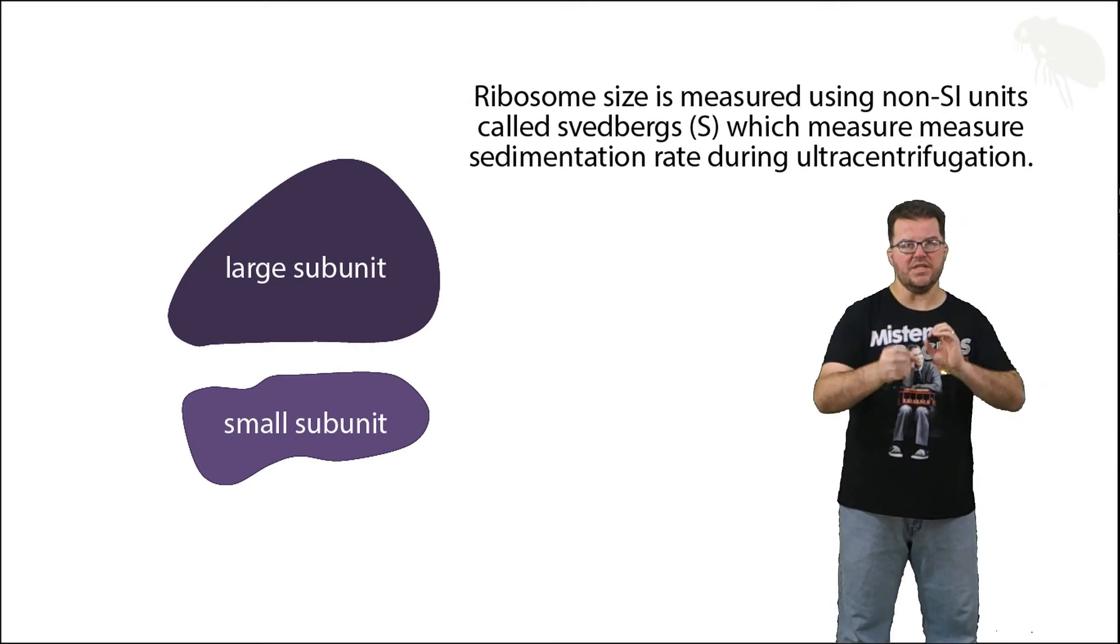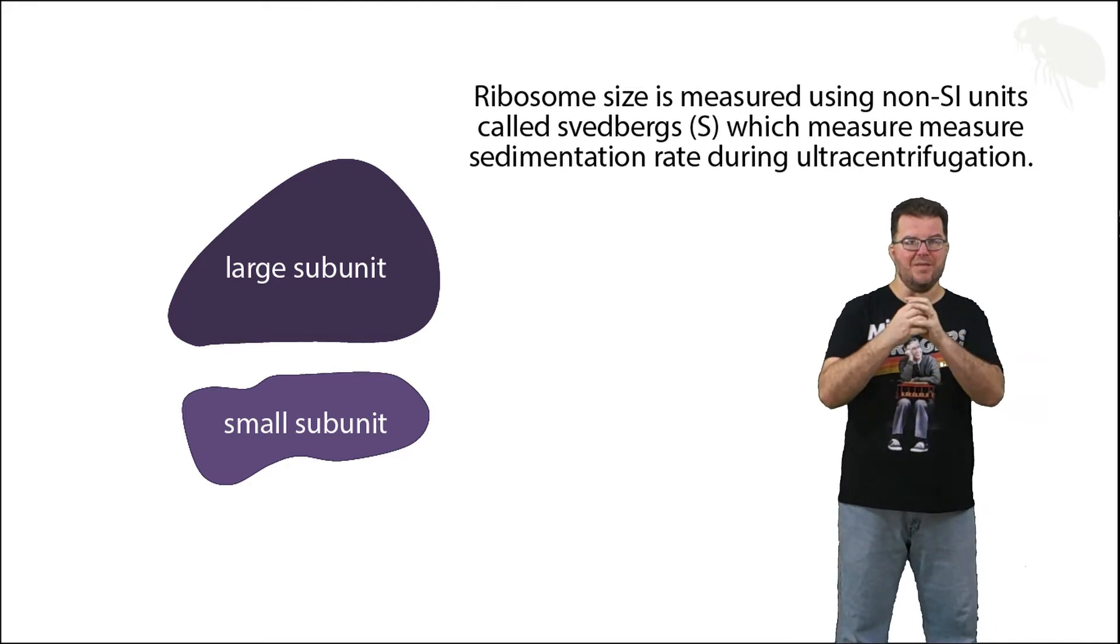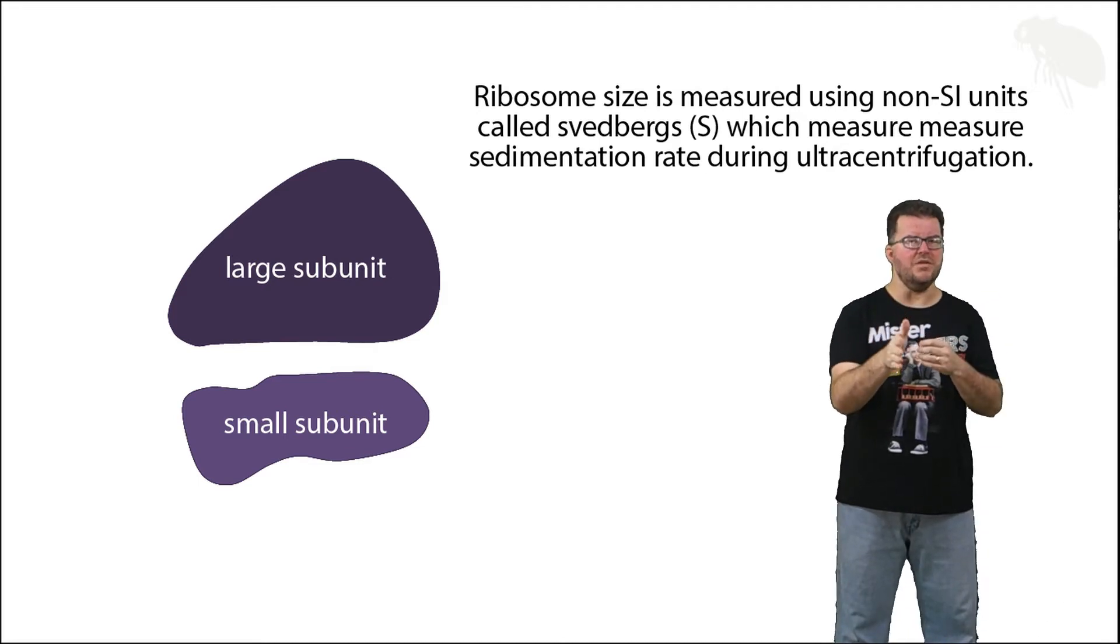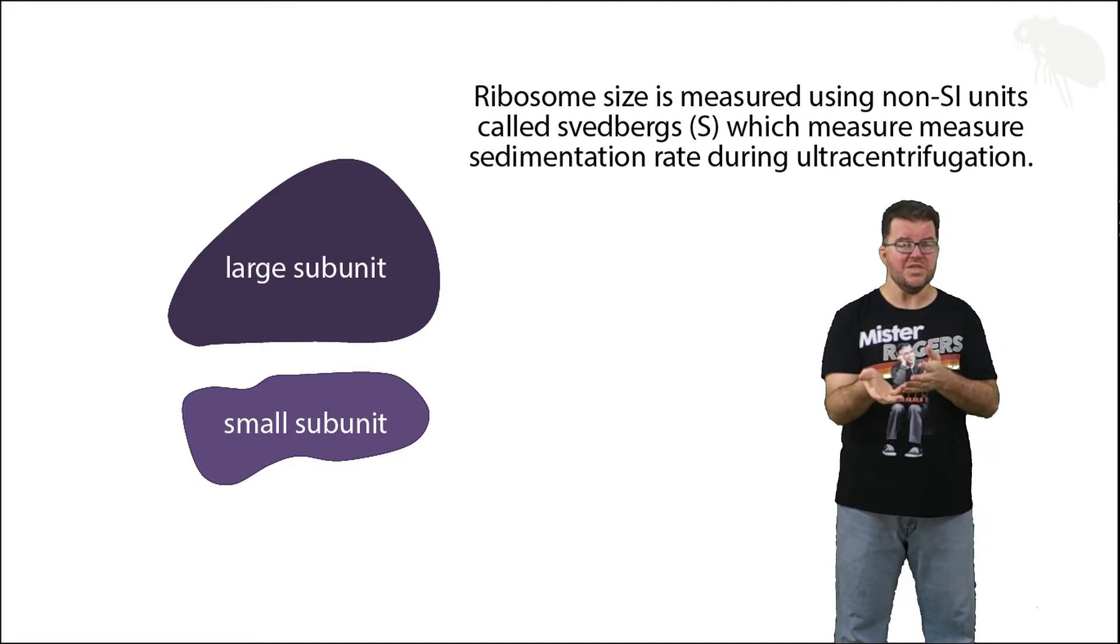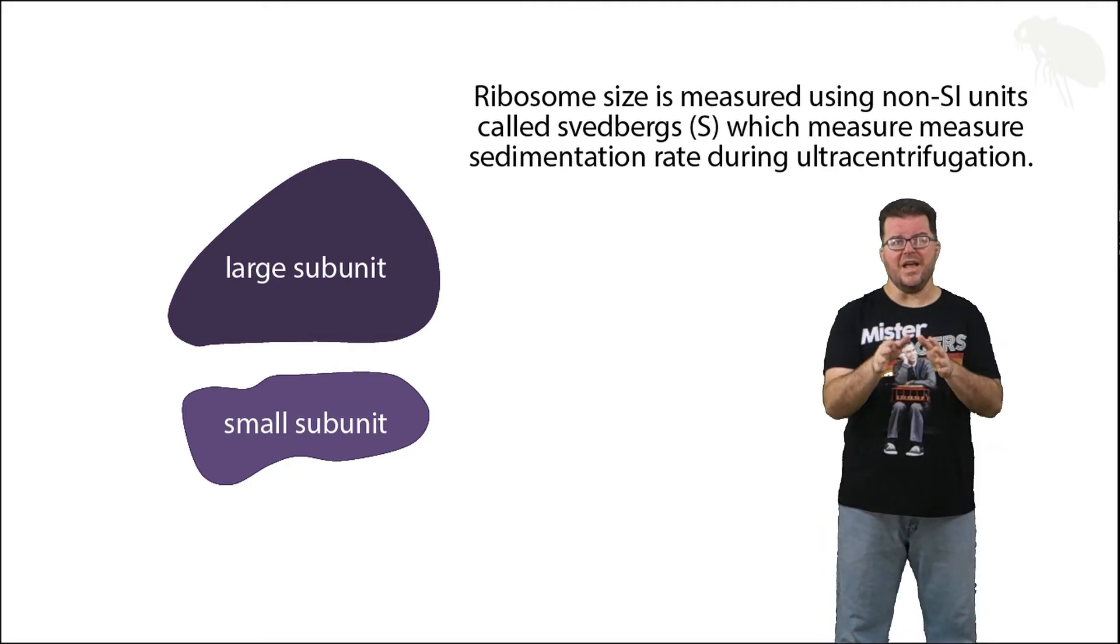But the real kicker here is it's a non-additive, non-SI unit, meaning the small and large subunits have their own individual Svedberg measurements, but the whole ribosome isn't simply adding those two numbers up together because that larger ribosome sediments at a different rate. I will probably do a video blog to talk about why we use this unit and what its advantages are. For right now, let's just focus on pro and eukaryotic ribosome sizes.